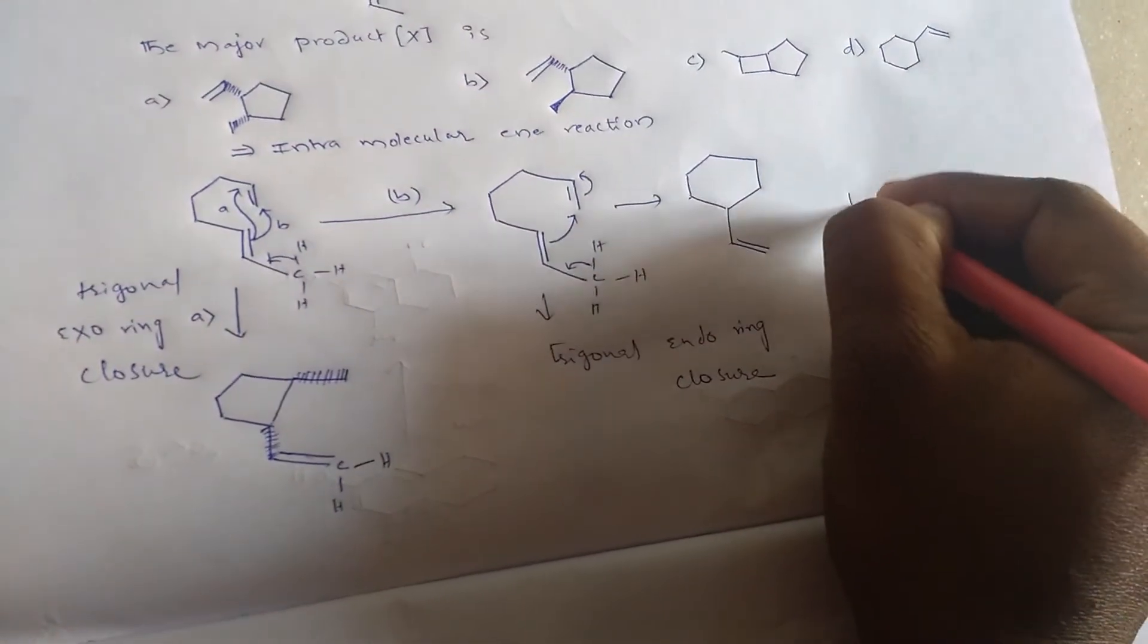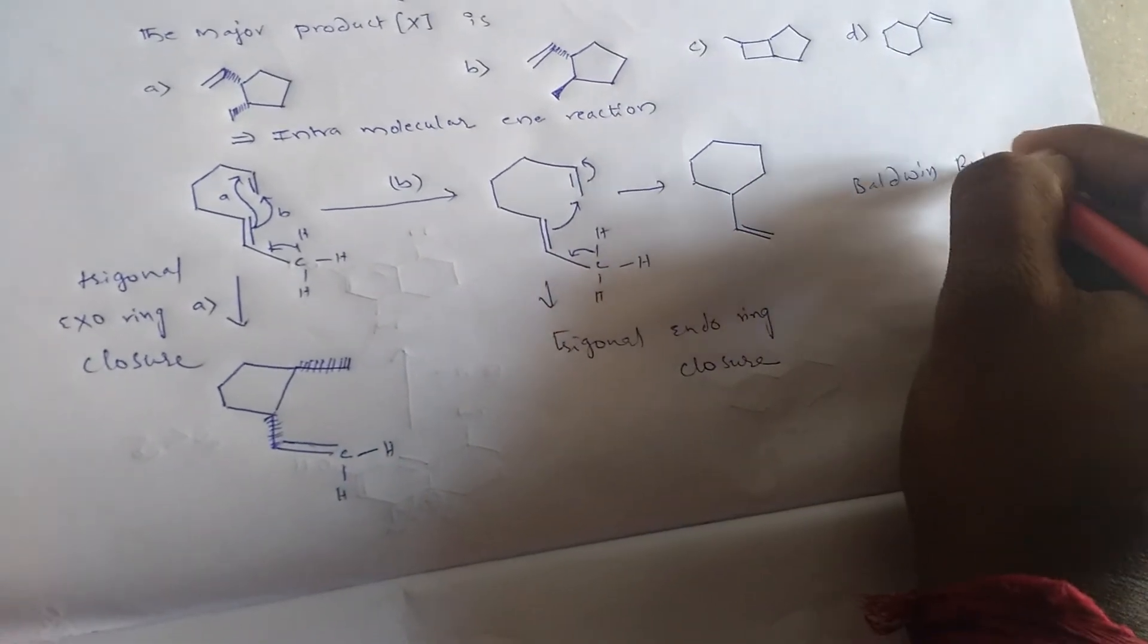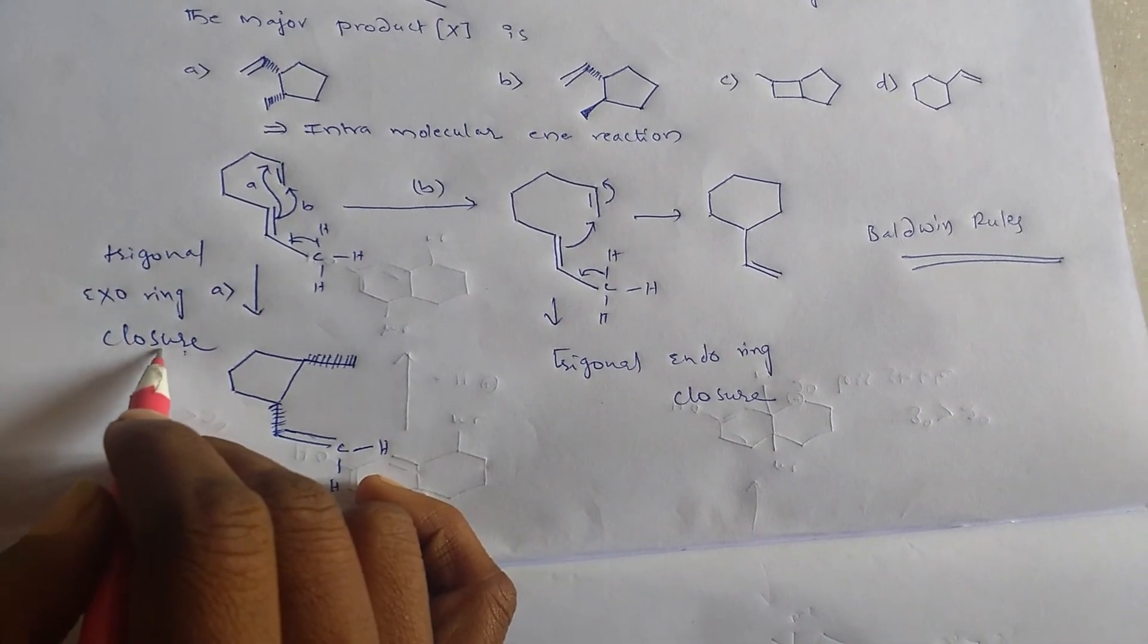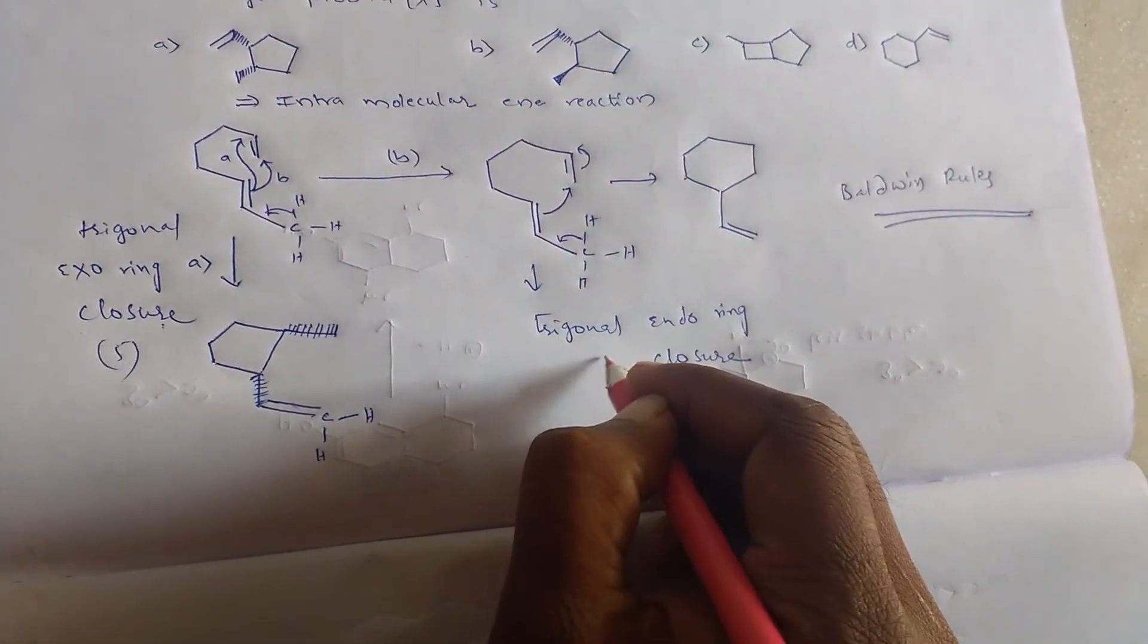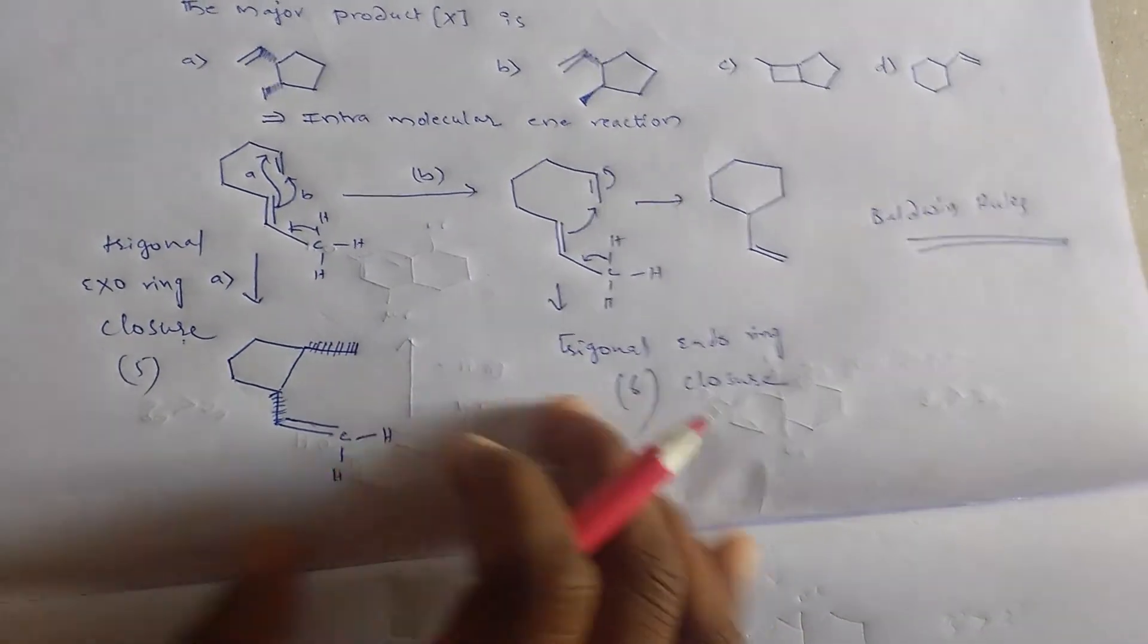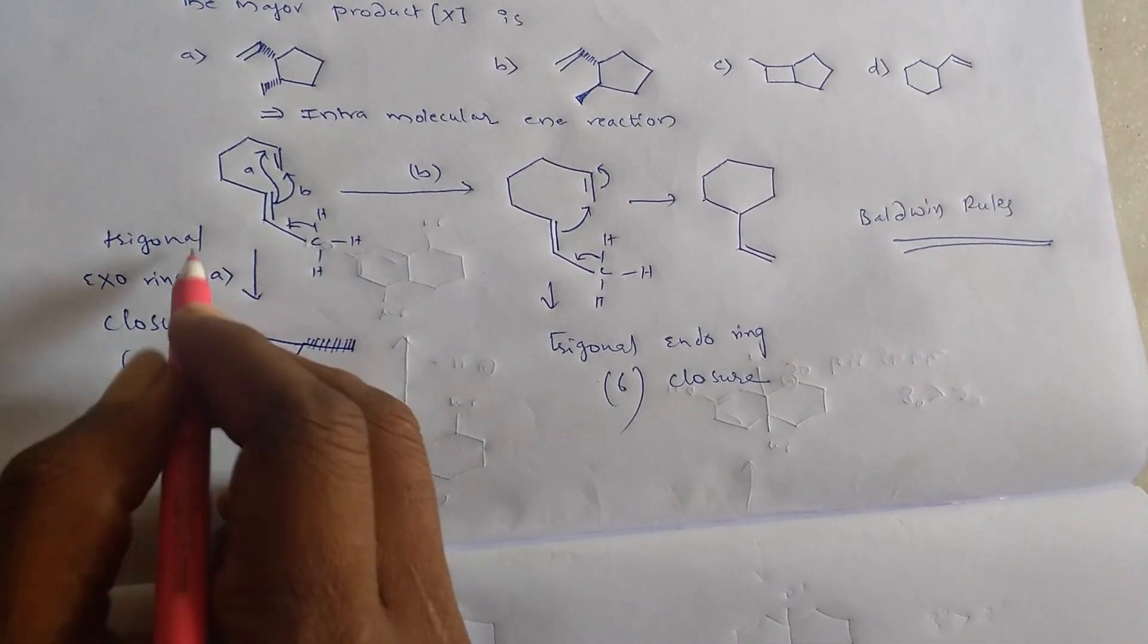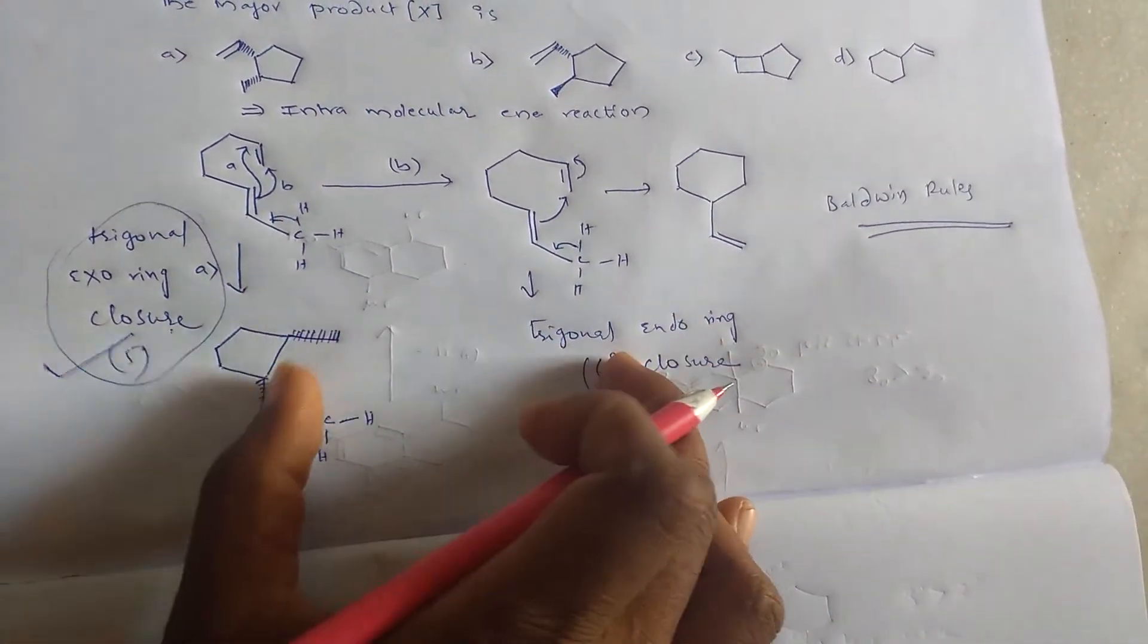Otherwise, these two are possible. According to Baldwin's rules, these two are possible. But when we compare these two, the major product, the more possible pathway reaction is trigonal exo-ring closure. So this is the major one when we compare both.